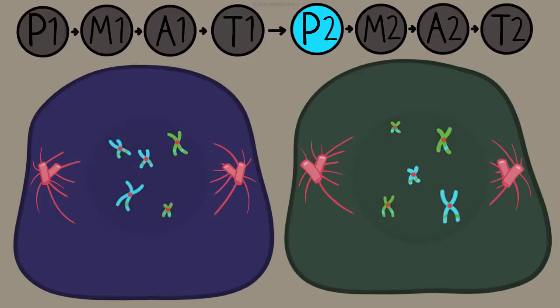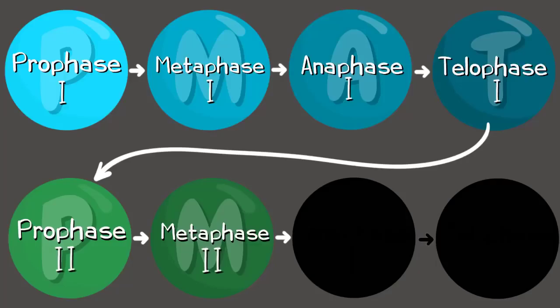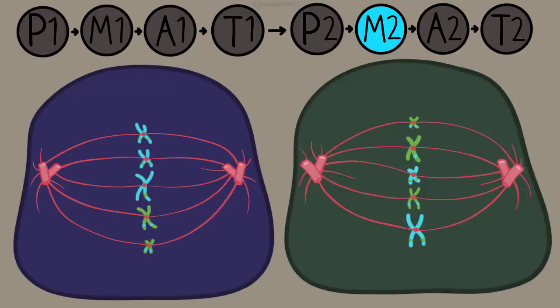But prophase two is just not as eventful of having that process of crossing over. In metaphase two, remember think M for middle, the chromosomes are going to line up in the middle. This time though, they are in a single file line. They are not in pairs like they were in metaphase one.